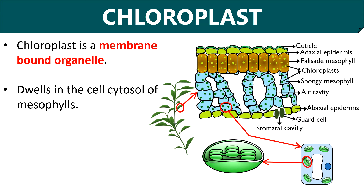Chloroplasts are membranous structures having an outer and inner membrane, and they are abundantly found in plant leaves. They are located in the mesophyll cells. This is the transverse section of a leaf and this is the enlarged view of a mesophyll cell. Here you can see that the chloroplast resides within the cell cytosol of a mesophyll cell.